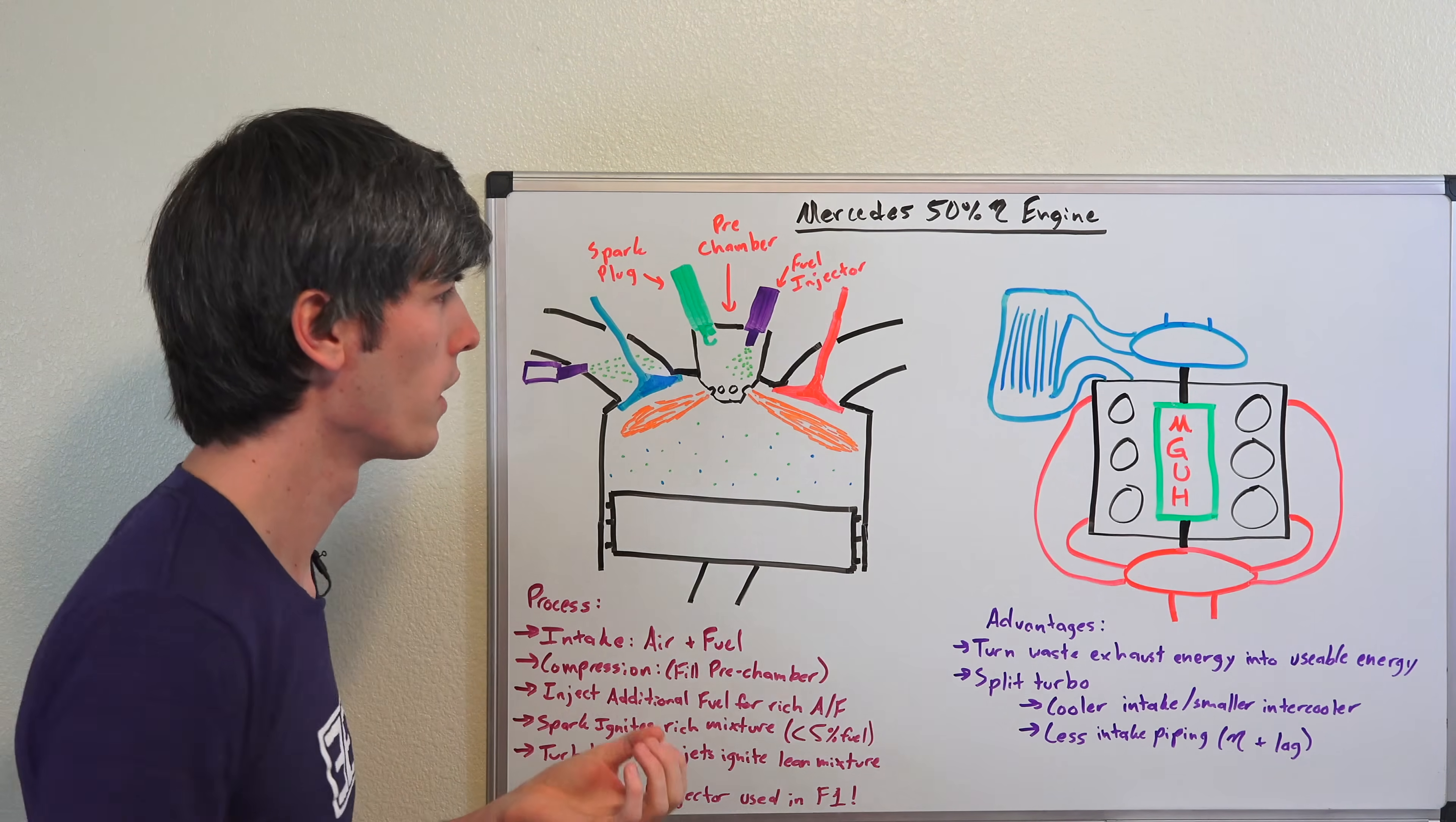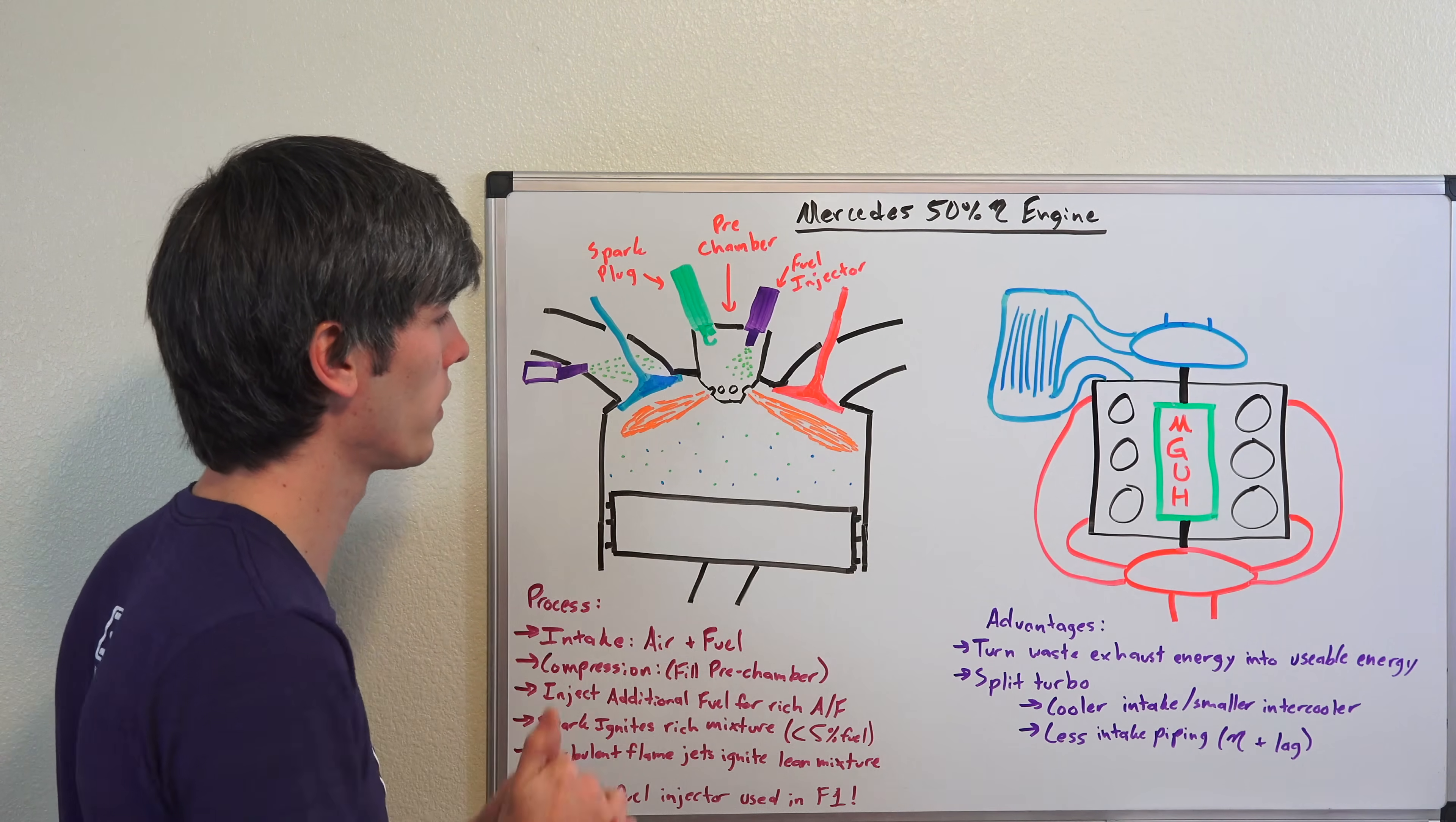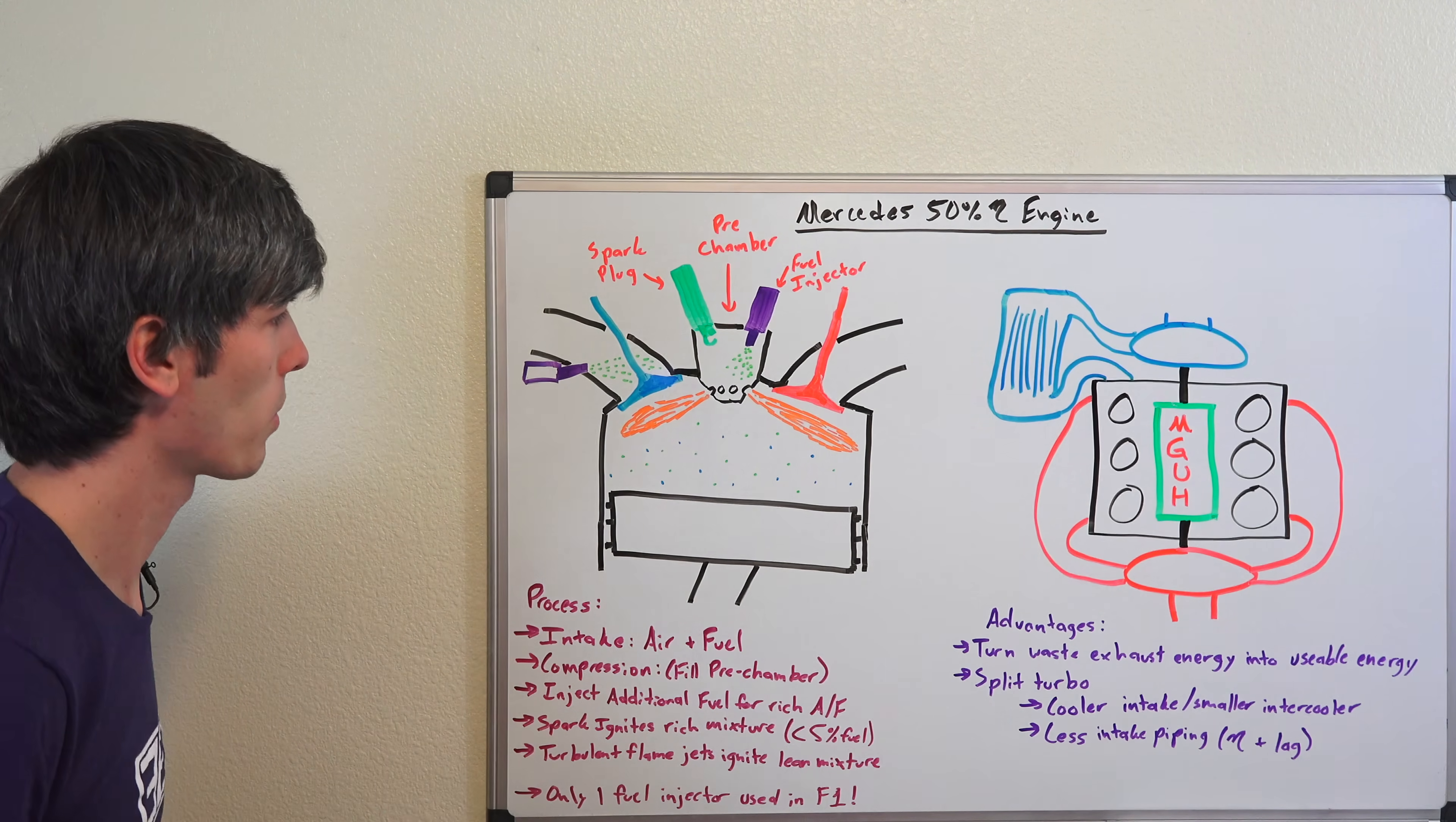But it's a huge advantage from an efficiency standpoint. Now the other big advantage done in Formula 1 is the combustion process itself, so maximizing the amount of useful work you're able to extract during combustion. And this is done using pre-chamber combustion, which is quite different than what is done in our cars where all of the combustion occurs within a single chamber rather than in this little pre-chamber which has your spark plug and a fuel injector. Now there's some differences here in what I've drawn versus what's done in Formula 1, which we'll get into towards the end. But basically the way this process works...